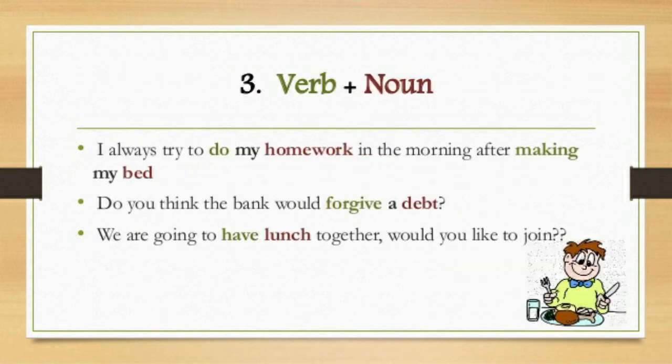The third type of collocations is a combination of verb and noun. A verb is an action word. So the third type of collocations are formed with the help of verb plus noun. Example: 'I always try to do my homework in the morning after making my bed.' Here 'do' is the verb and 'homework' is the noun — 'do homework' is a verb plus noun collocation.